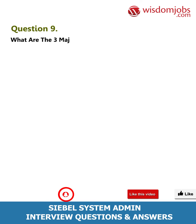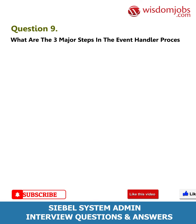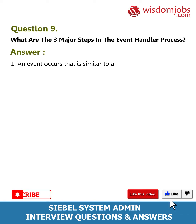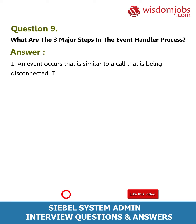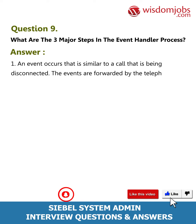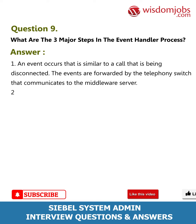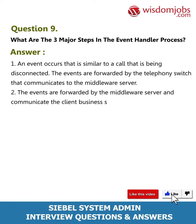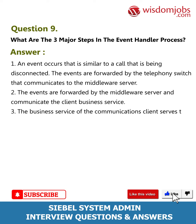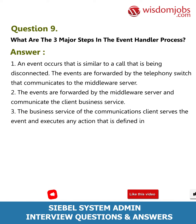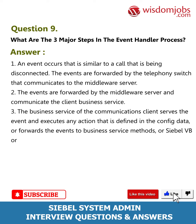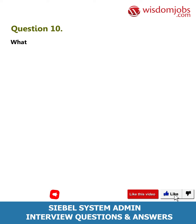Question 9: What are the three major steps in the event handler process? Answer: 1. An event occurs, such as a call being disconnected; the events are forwarded by the telephony switch that communicates to the middleware server. 2. The events are forwarded by the middleware server and communicated to the client business service. 3. The business service of the communications client serves the event and executes any action defined in the config data, or forwards the events to business service methods, Siebel VB, or Siebel eScript code.